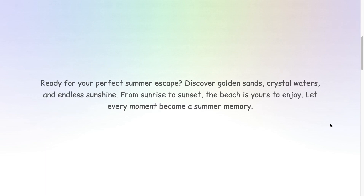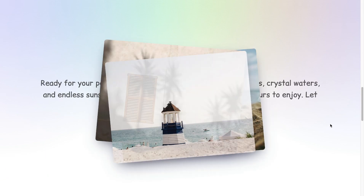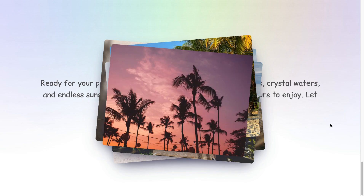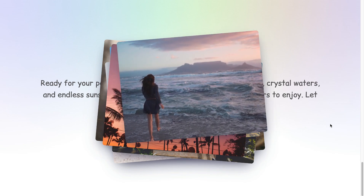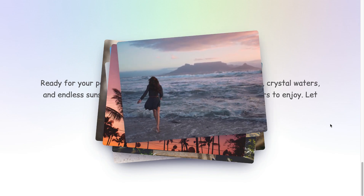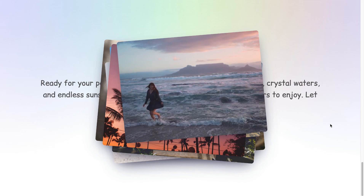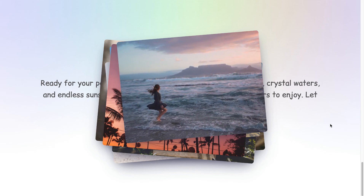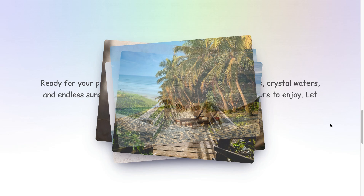Hi everyone! In this tutorial, we will create a scroll-based animation using GSAP ScrollTrigger. After the text appears, images and a video fade in with random positions and a staggered effect. The animation speed depends on how fast or slow we scroll. Let's get started.